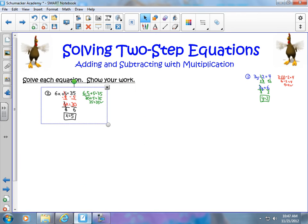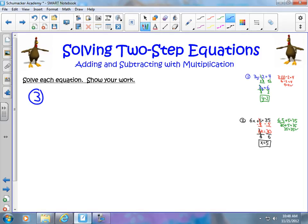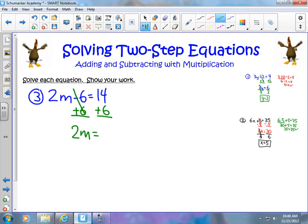We're going to move on to another subtraction equation with subtraction and multiplication. Let's say we have 2m minus 6 equals 14. In this case, I'm going to have to undo the subtraction by adding. So I'm going to add 6 to both sides. These cancel out. I end up with 2m equals 20. And I can undo the multiplication by dividing by 2. These cancel out. I get m equals 10.